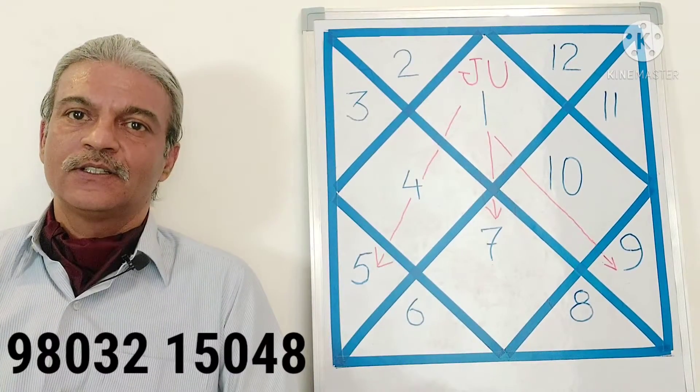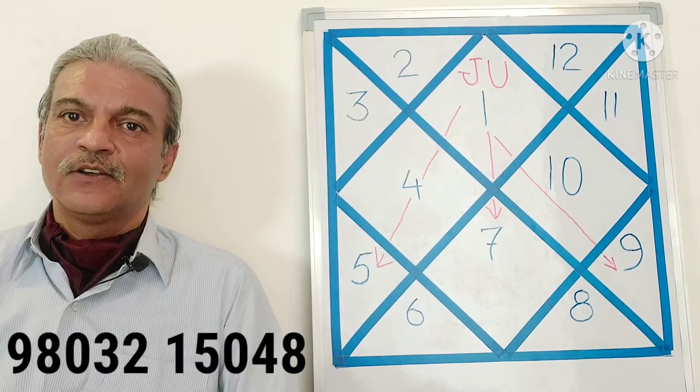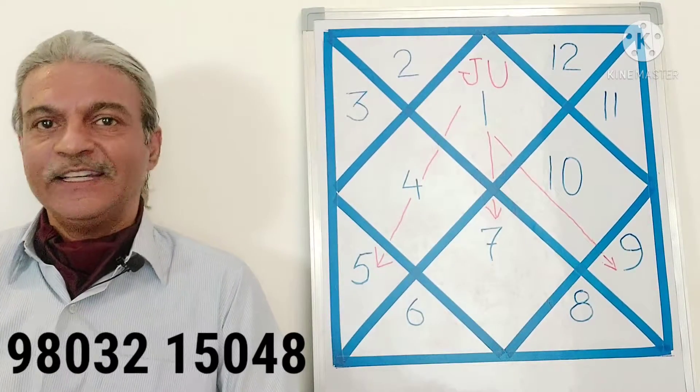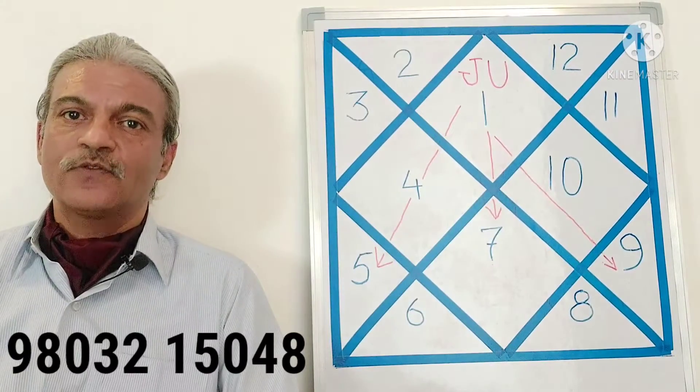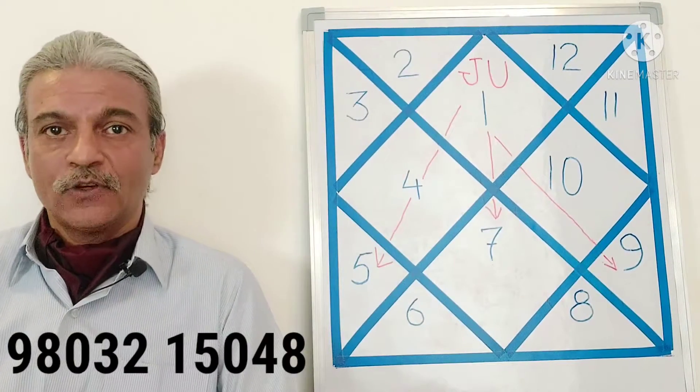Jupiter aspects the houses 5th, 7th and 9th to it. That is, wherever Jupiter is sitting in a horoscope, it will aspect the house 5th from it, 7th from it and 9th from it.